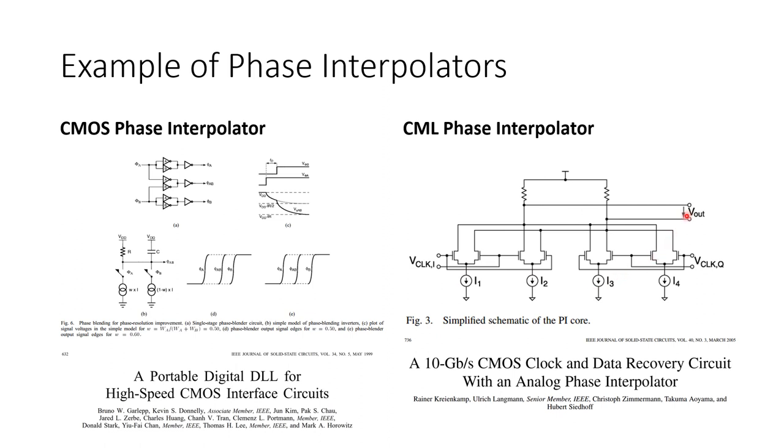But if you have two tail currents active at the same time, for example, I4 and I2 active at the same time, what you end up with at the output is a sort of interpolation or blend between clock I and clock Q.